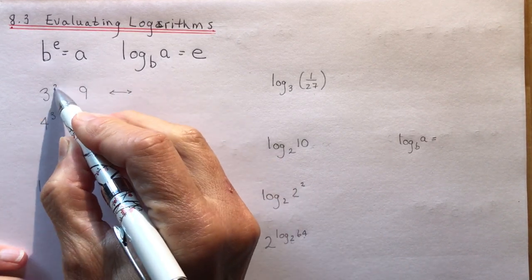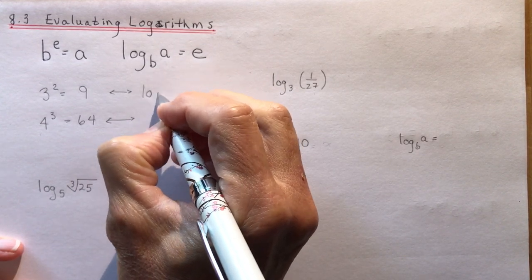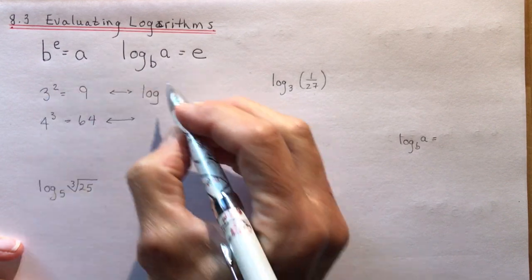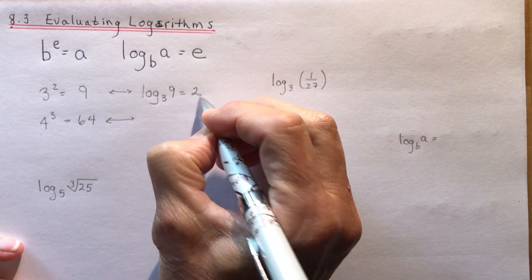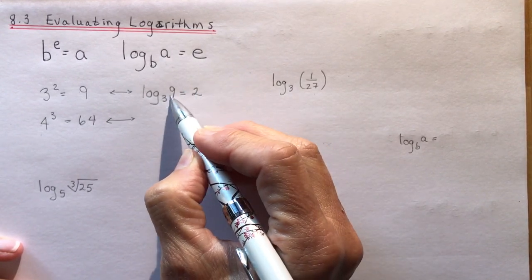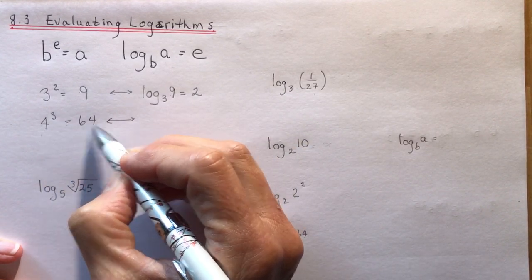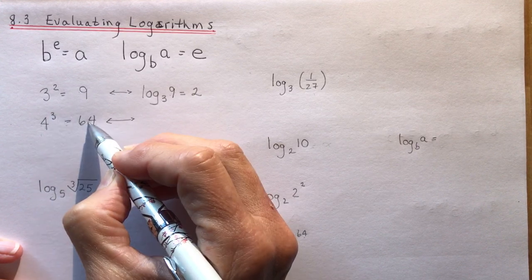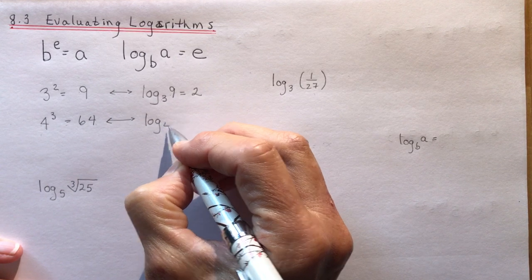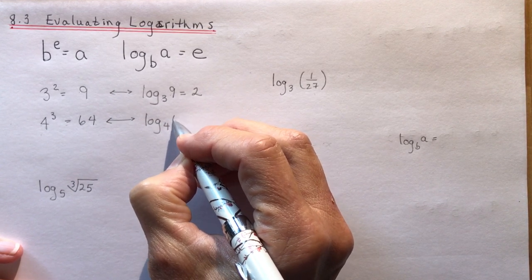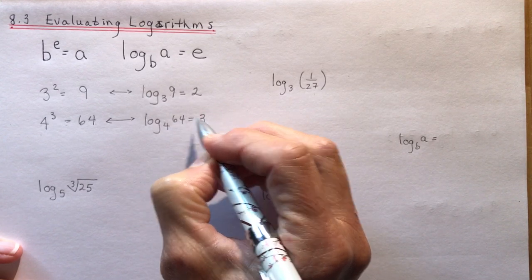Let's take a look. If we have 3 squared equals 9 and I want to write it in logarithmic form, look how easy that is: I write log, my base b is 3, my answer is 9, and my exponent is 2 — so log base 3 of 9 equals 2. Similarly, 4 cubed equals 64: base is 4, answer is 64, exponent is 3, so log base 4 of 64 equals 3.